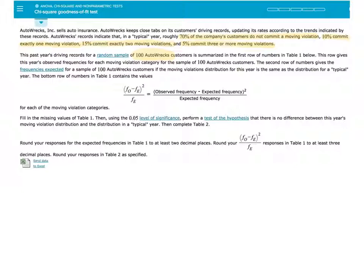Autorex Inc. sells auto insurance. Autorex keeps close tabs on its customers' driving records, updating its rates according to the trends indicated by these records. Autorex records indicate that, in a typical year, roughly 70% of customers do not commit a moving violation, 10% commit exactly one moving violation, 15% commit exactly two moving violations, and 5% commit three or more moving violations.